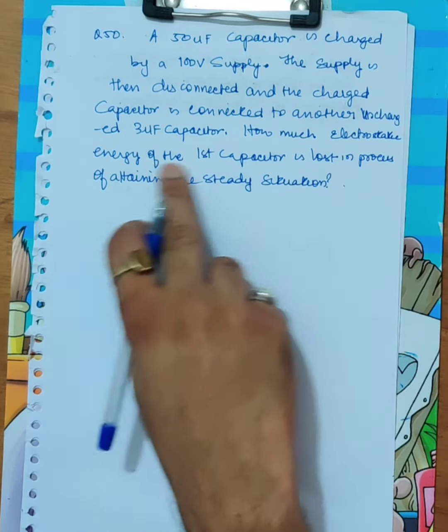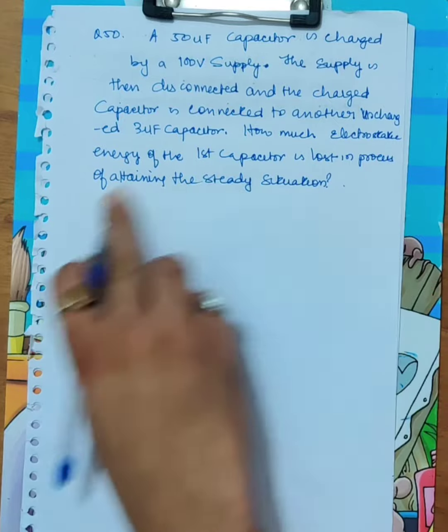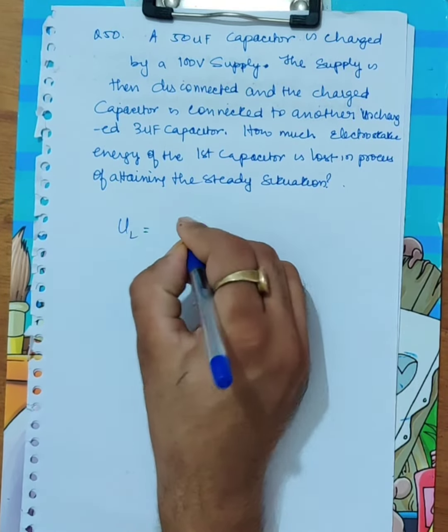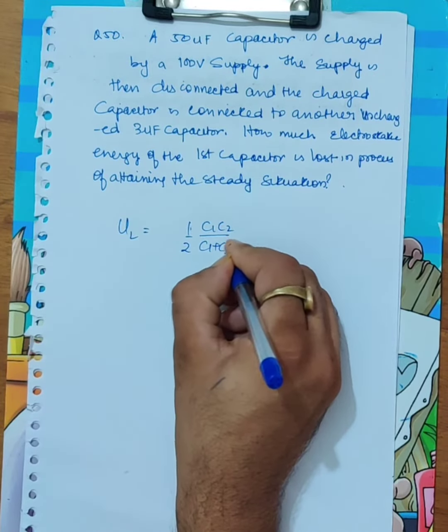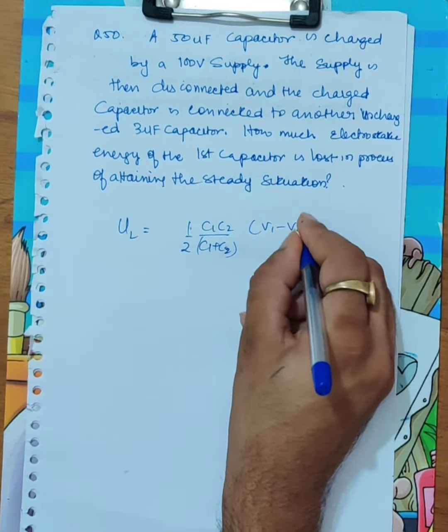How much electrostatic energy is lost by the first capacitor in the process of attaining steady state? The energy lost equals one half C1 times C2 upon C1 plus C2 into V1 minus V2 whole square.